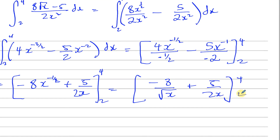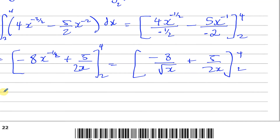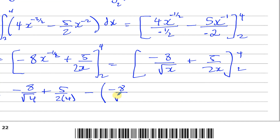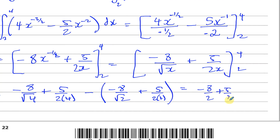Substituting the limits: for x equals 4, we get minus 8 over root 4 plus 5 over 8; for x equals 2, we get minus 8 over root 2 plus 5 over 4. This gives minus 8 over 2 plus 5 over 8, minus the bracket containing plus 8 over root 2 minus 5 over 4.